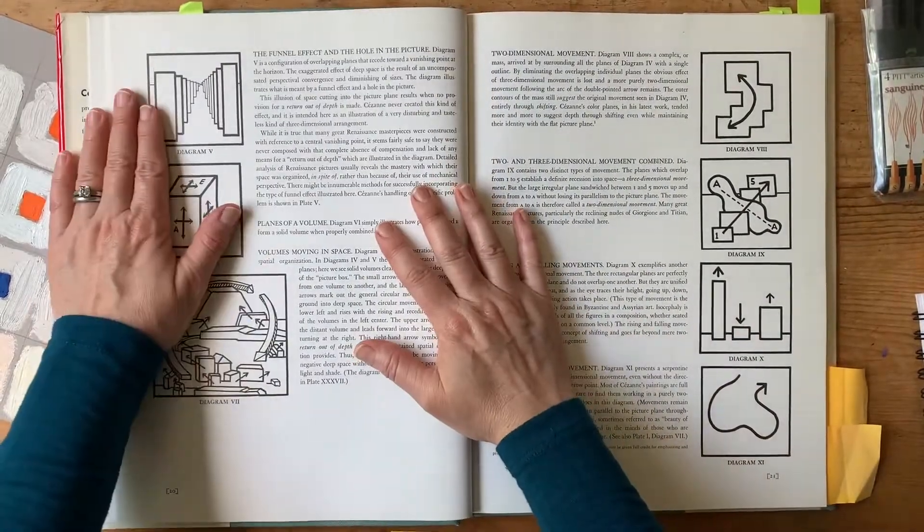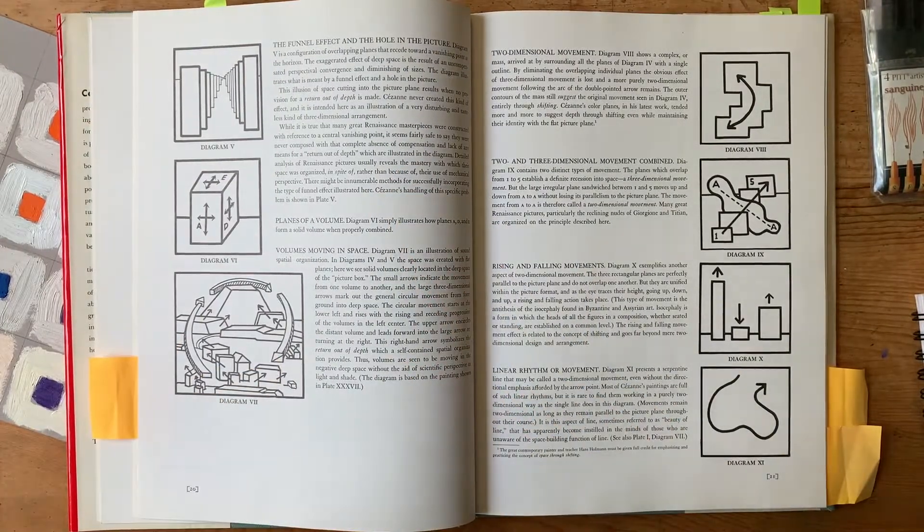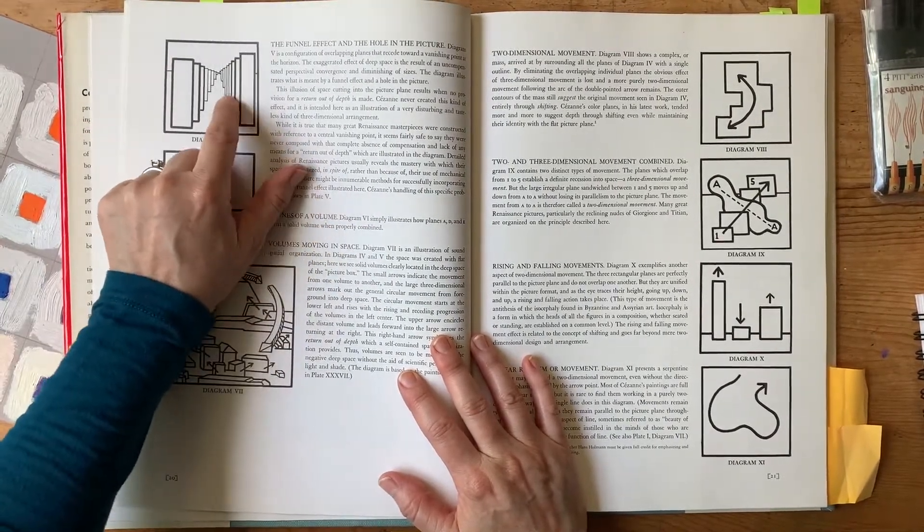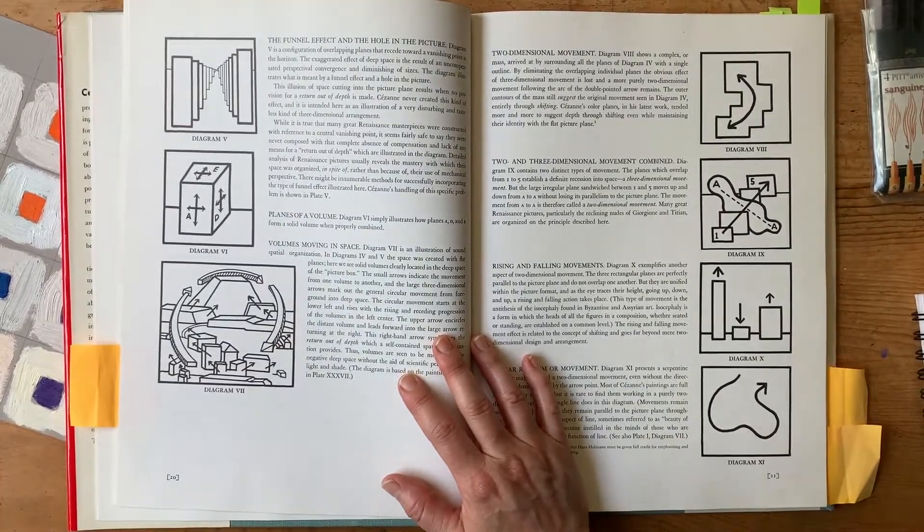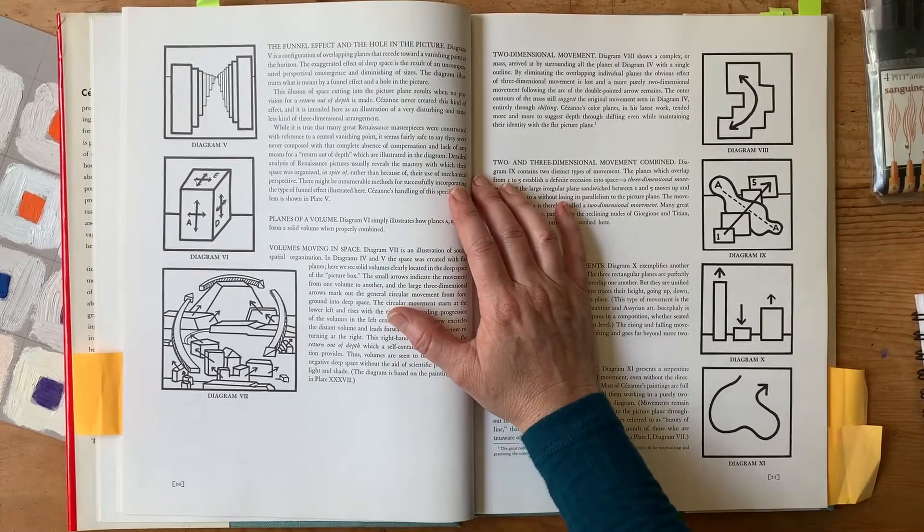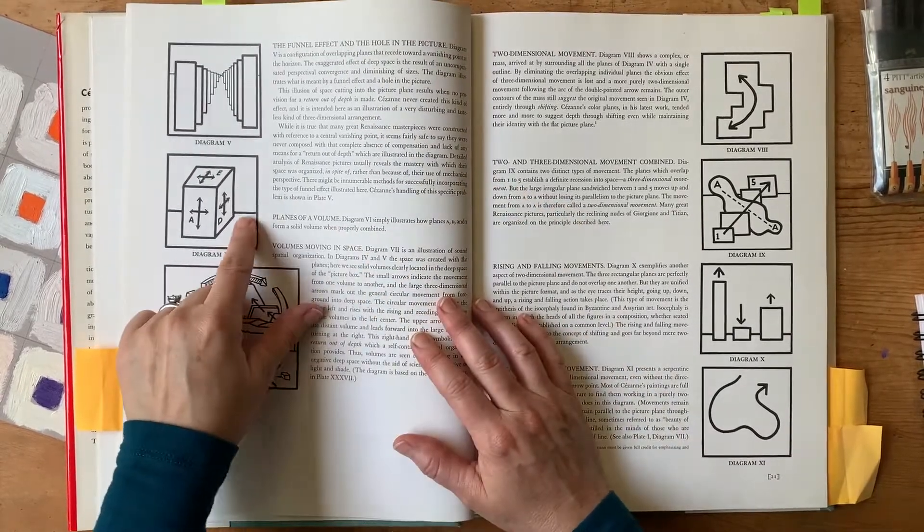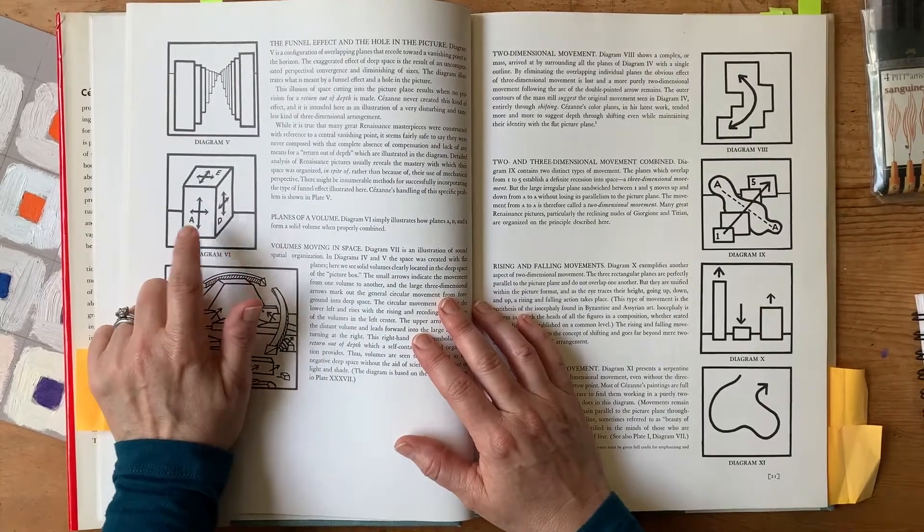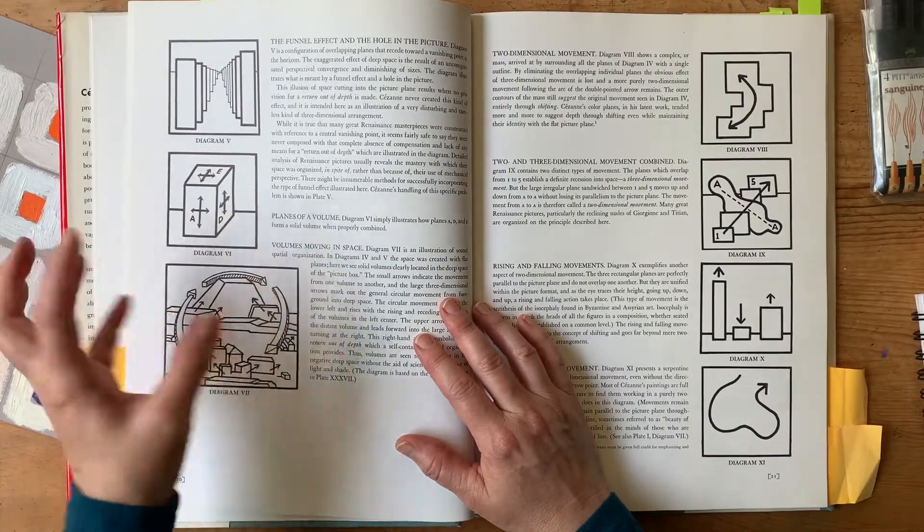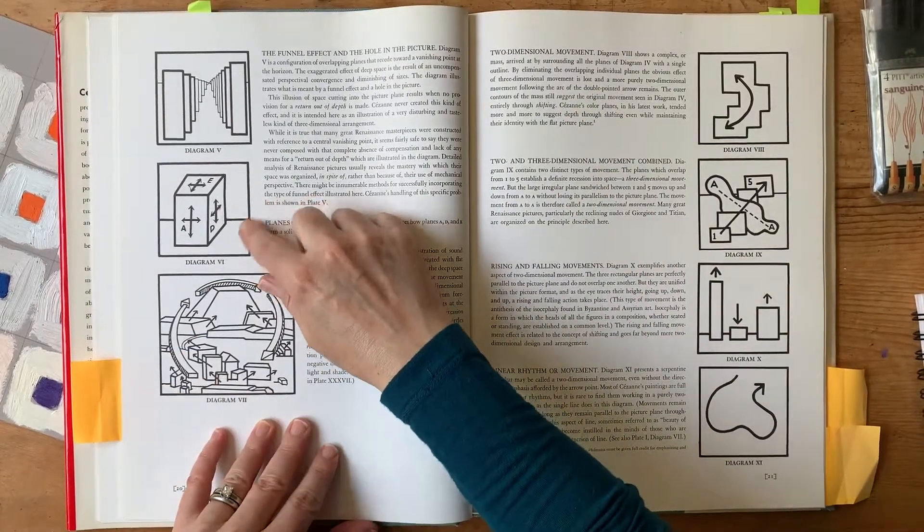And then the next chapter or the next diagram talks about the funnel effect or that idea of one point perspective. And if you created a plane that connected there, then you'd have three-dimensional volumes going back also in that one point perspective. Brunelleschi kind of codified our one point perspective in the Renaissance. Another way you can create visual depth inside your picture plane is by depicting volumes. When you create that volume, that automatically creates even more visual depth in your two-dimensional picture plane.